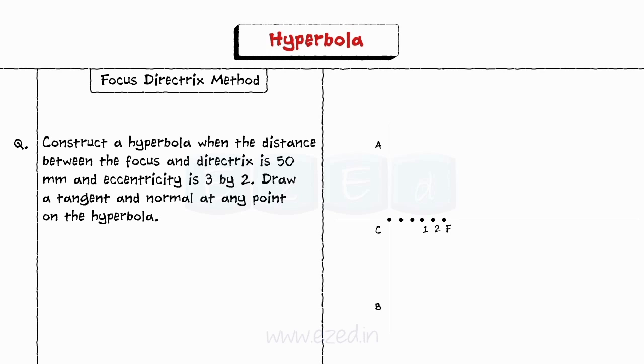Step 3. Mark the vertex V on the third division point from F. Step 4. From V draw a perpendicular line and mark point E such that VF equals VE.